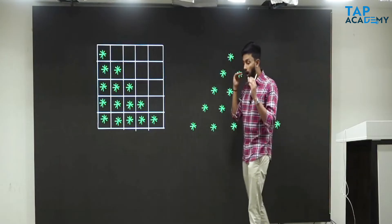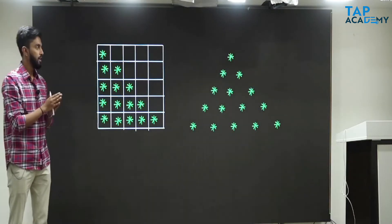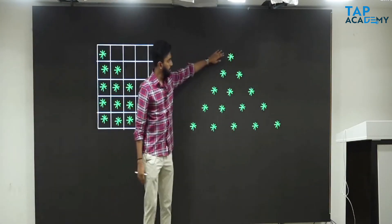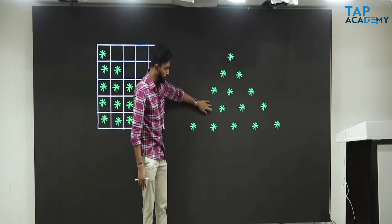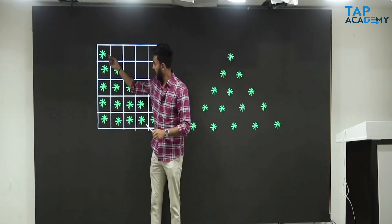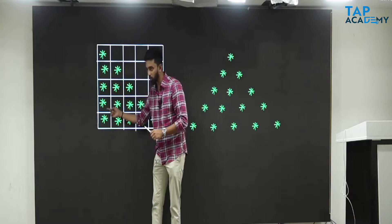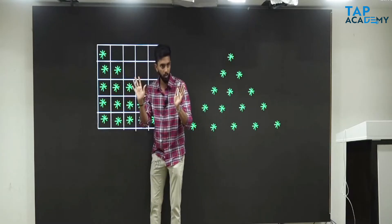See here: one star, two stars, three stars, four stars, five stars — and on the other side: one star, two stars, three stars, four stars, five stars. The number of stars is the same in both patterns.